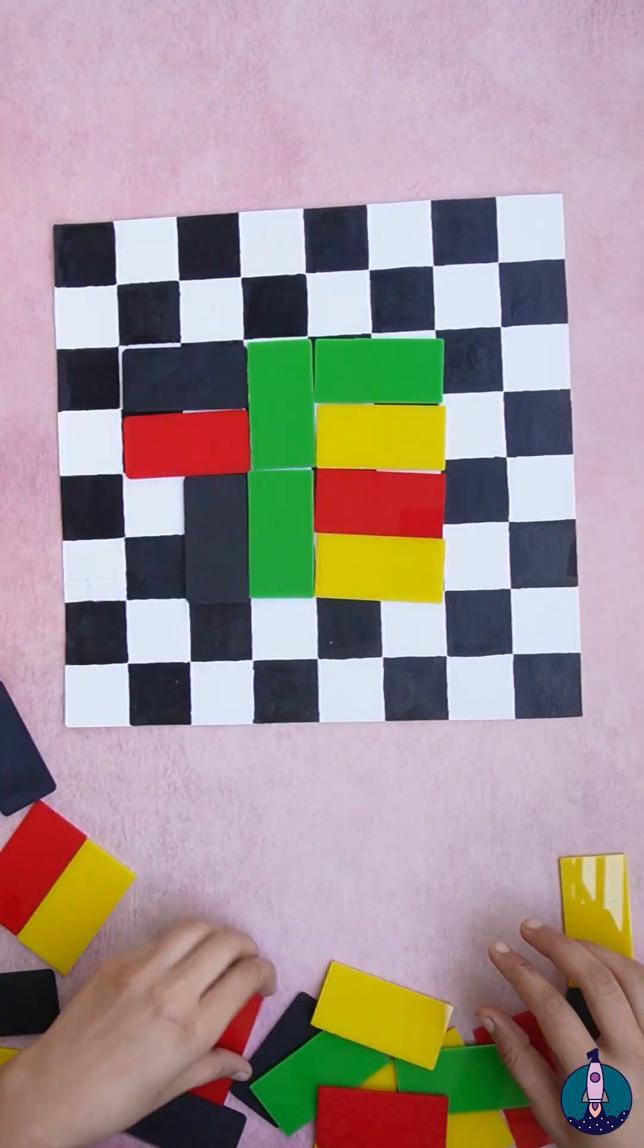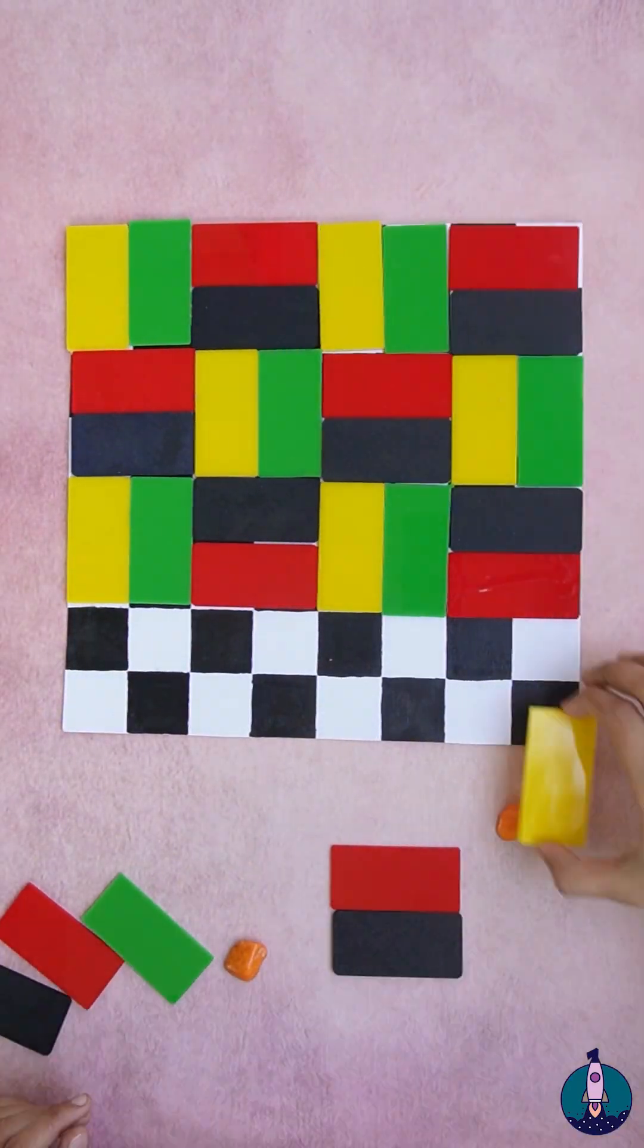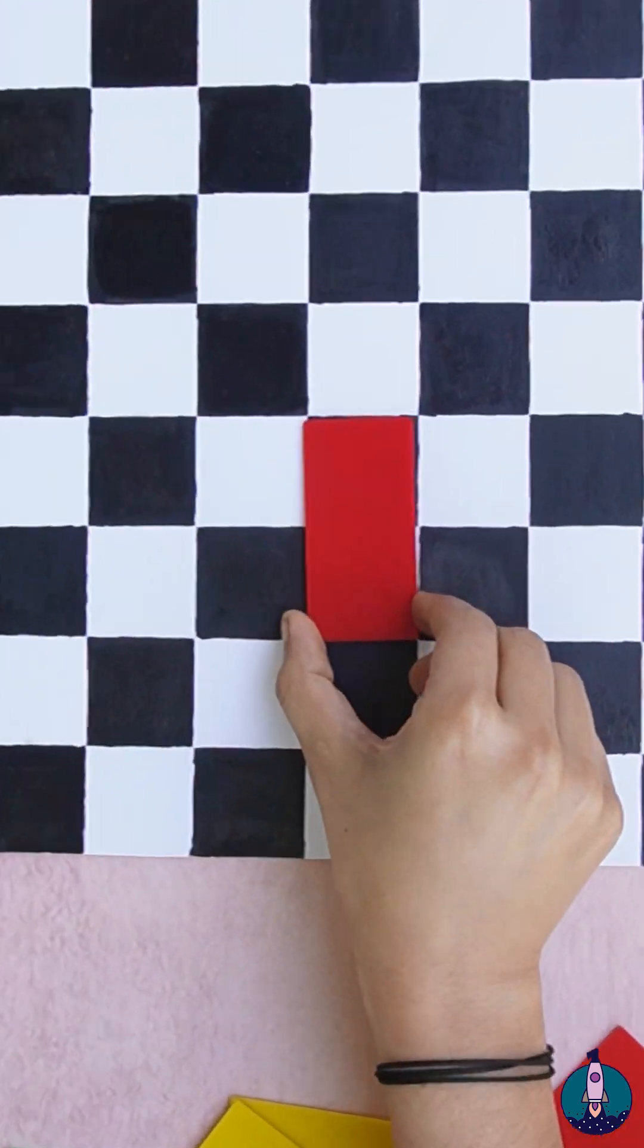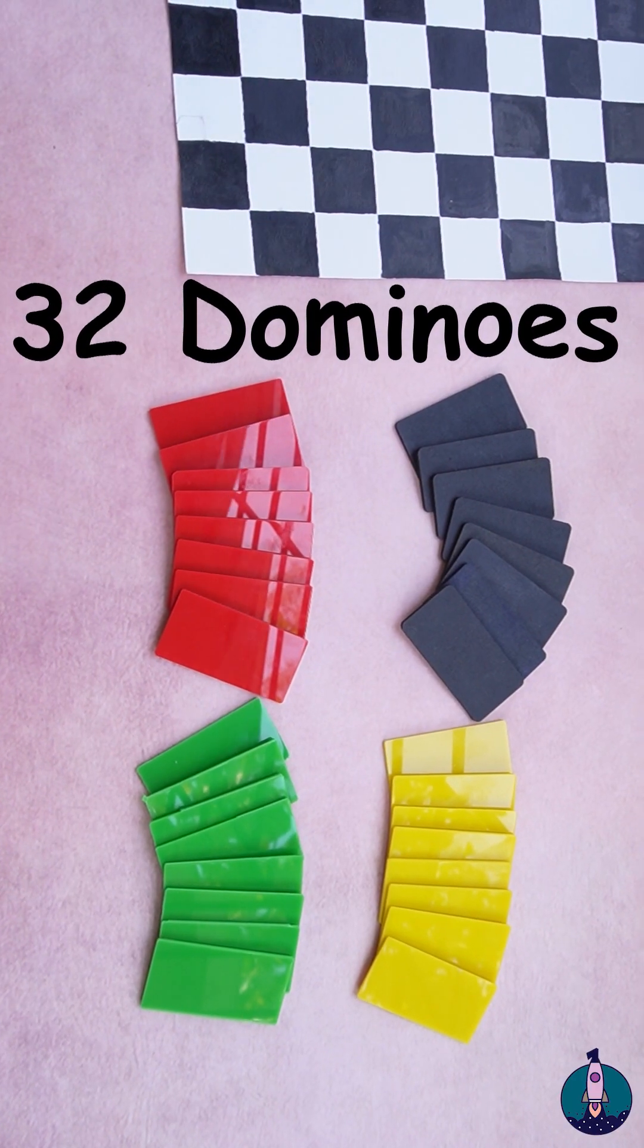There are millions of ways to put these dominoes on this chessboard. Each domino covers two squares and we need 32 such dominoes.